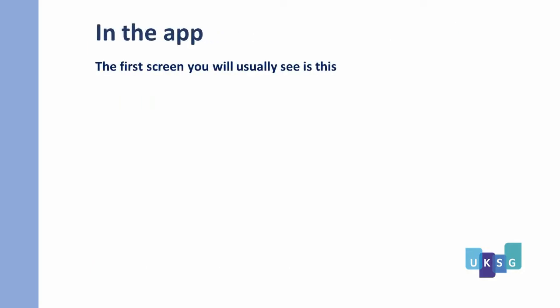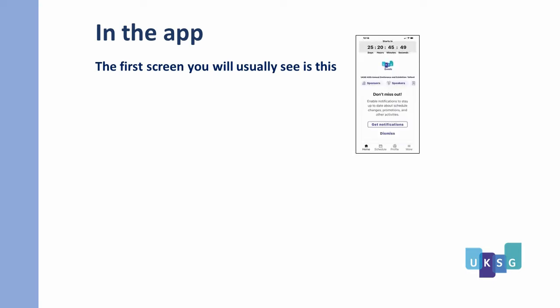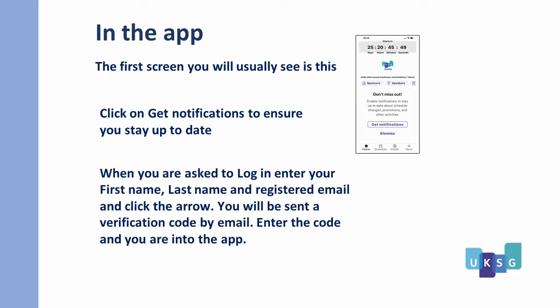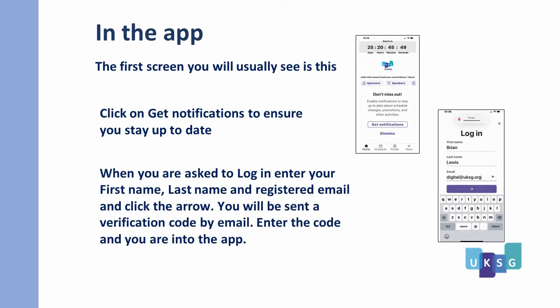Now you are in the app. The first screen you will see is usually this screen. Click on Get Notifications to ensure you stay up to date. When you are first asked to log in, enter your first name, last name and registered email and click the arrow. You will be sent a verification code by email. Enter the code and you are into the app.